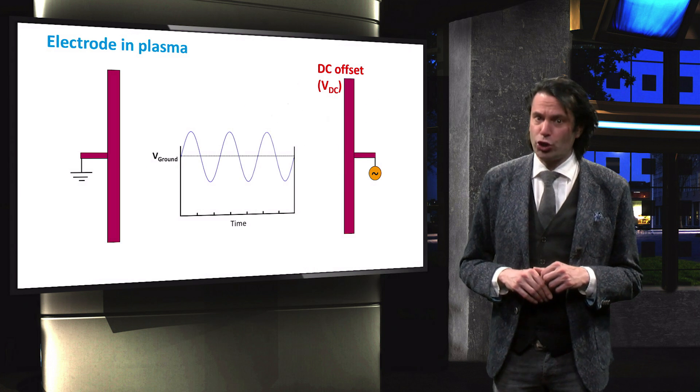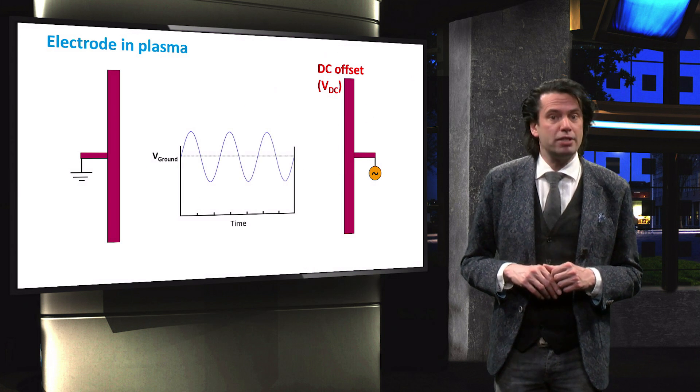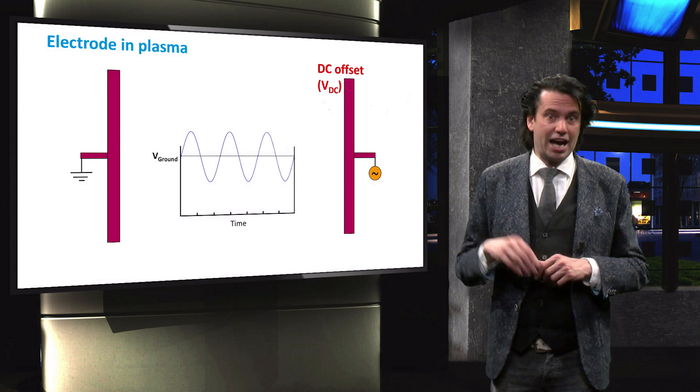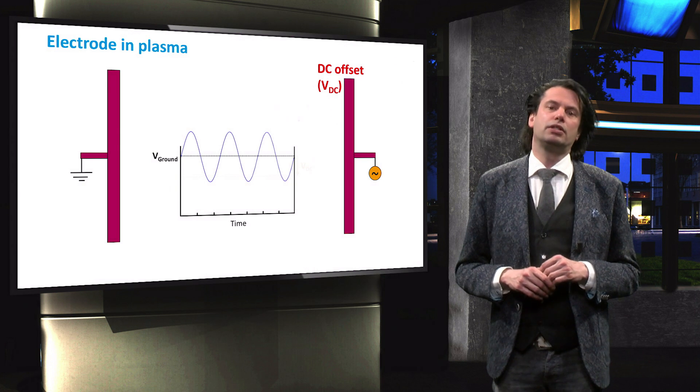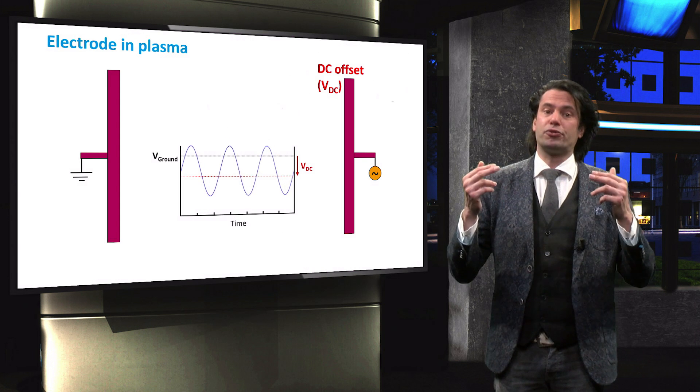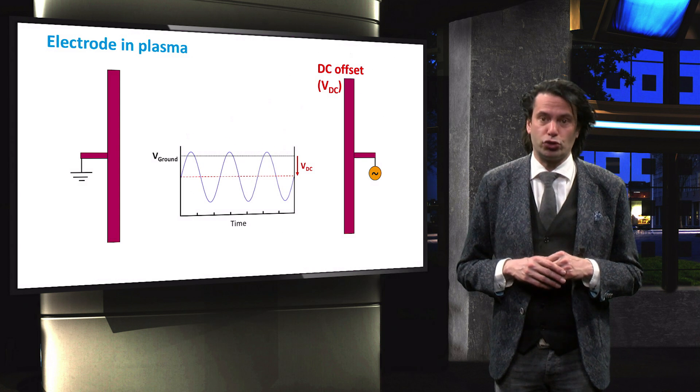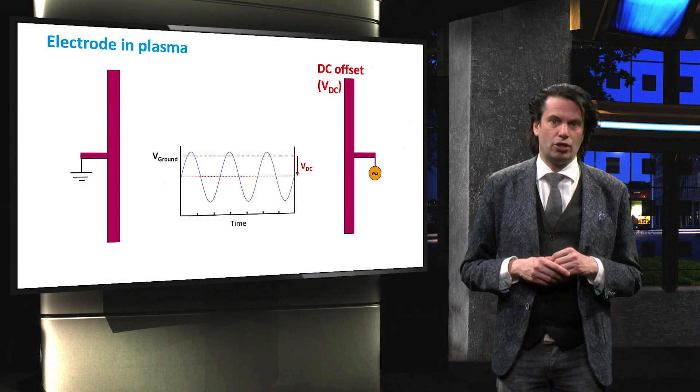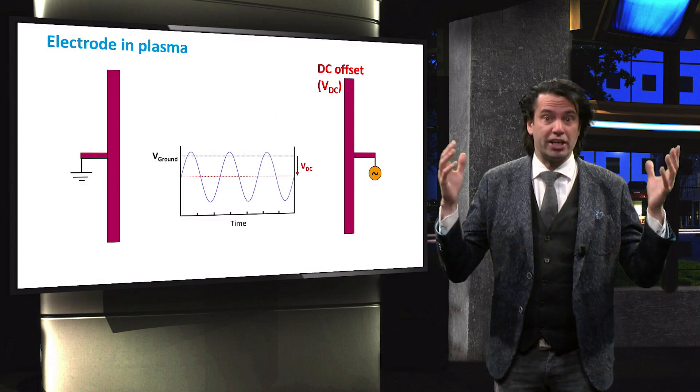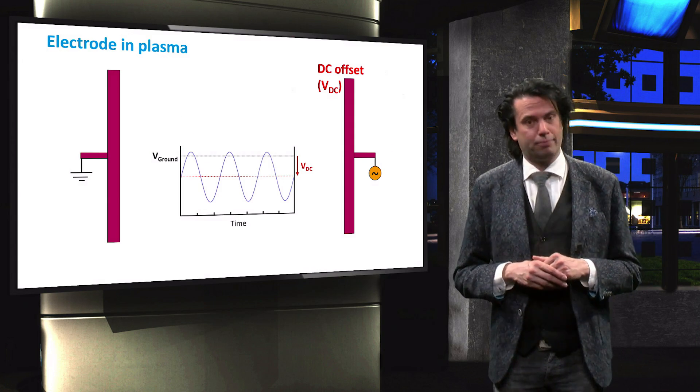This figure shows the AC voltage supplied by the RF generator at the powered electrode. The DC offset decreases the potential observed at the surface of the electrode. So what then does the potential in the plasma look like? We will look into the plasma potential in the next video, where we continue our discussion of plasma enhanced chemical vapor deposition.